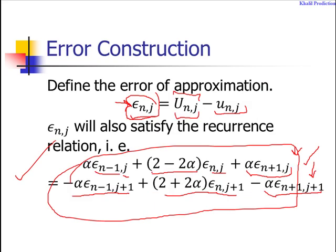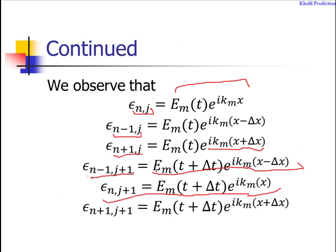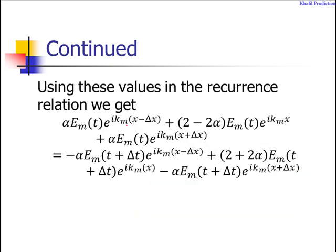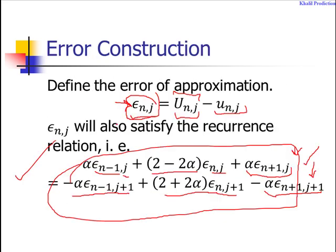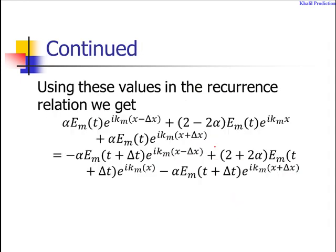Now, substituting these values of the error at different nodes into the main recurrence relation, we get: alpha e_m(t)e^(-i k_m Δx) + (2 - 2α)e_m(t) + alpha e_m(t)e^(i k_m Δx) equals minus alpha e_m(t + Δt)e^(-i k_m Δx) + (2 + 2α)e_m(t + Δt) minus alpha e_m(t + Δt)e^(i k_m Δx).